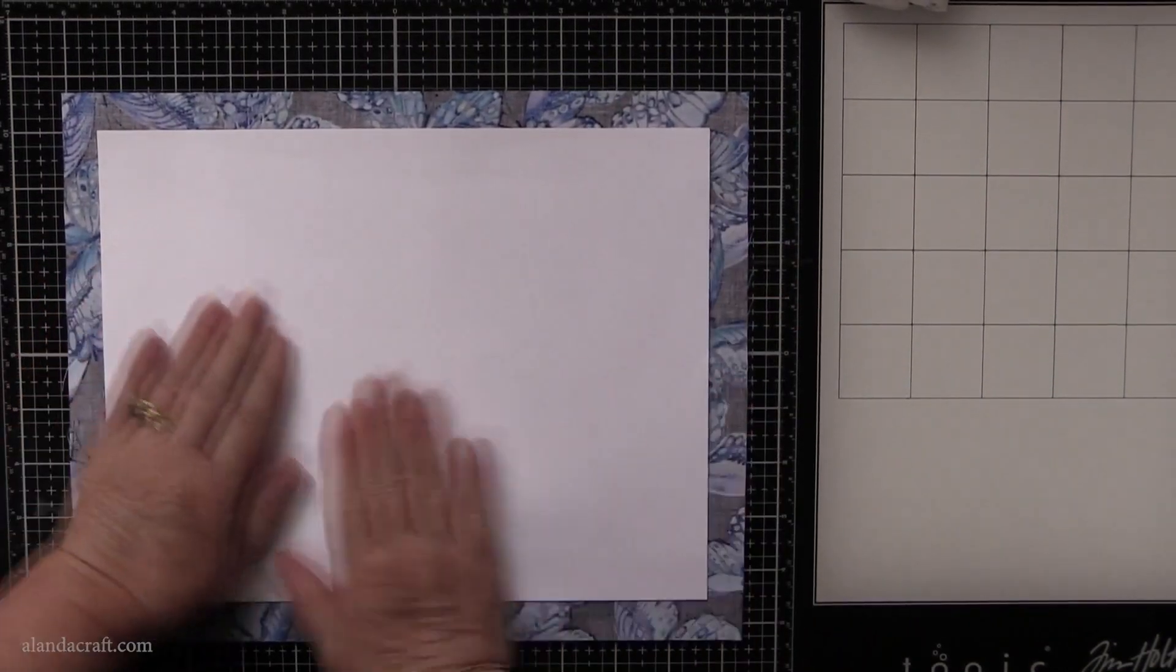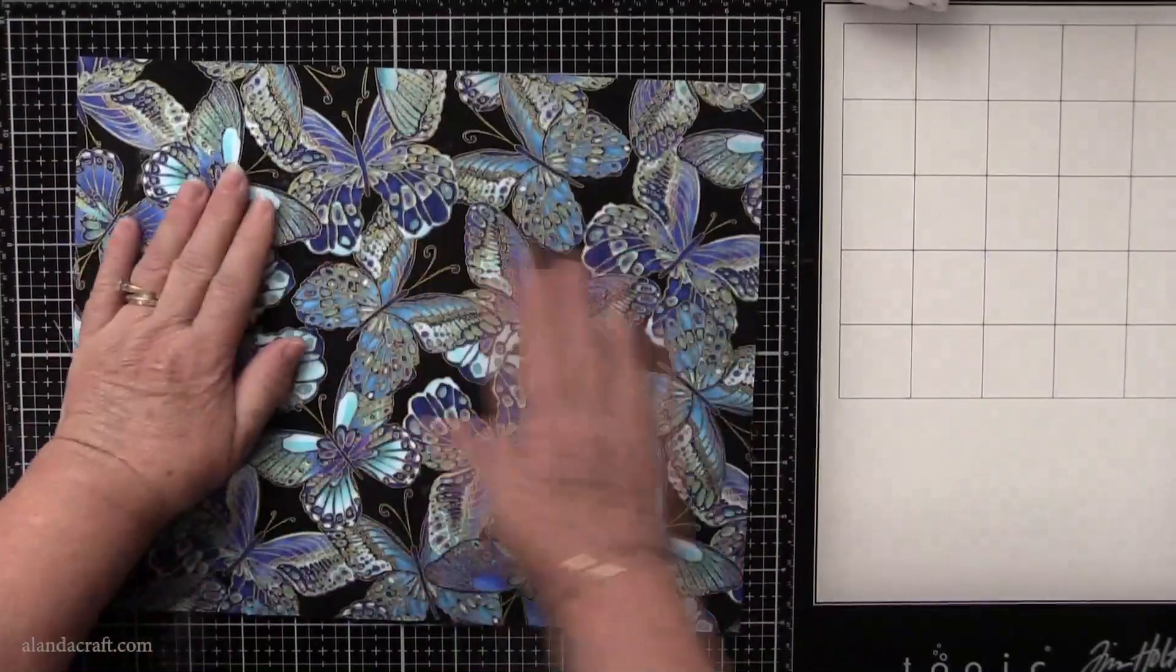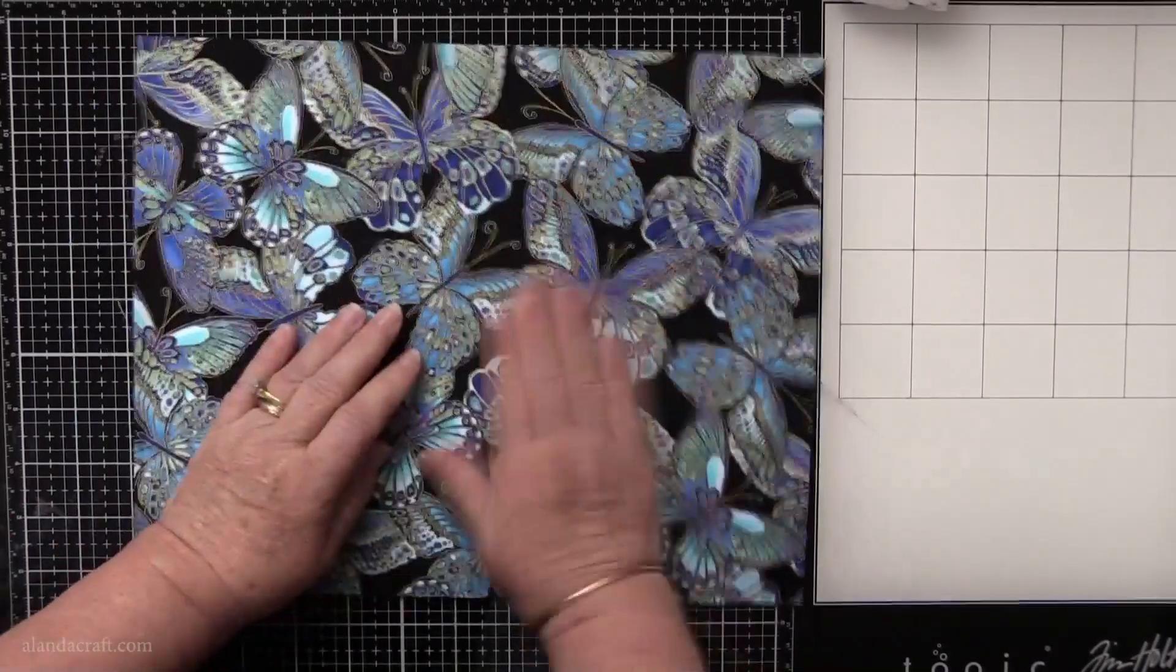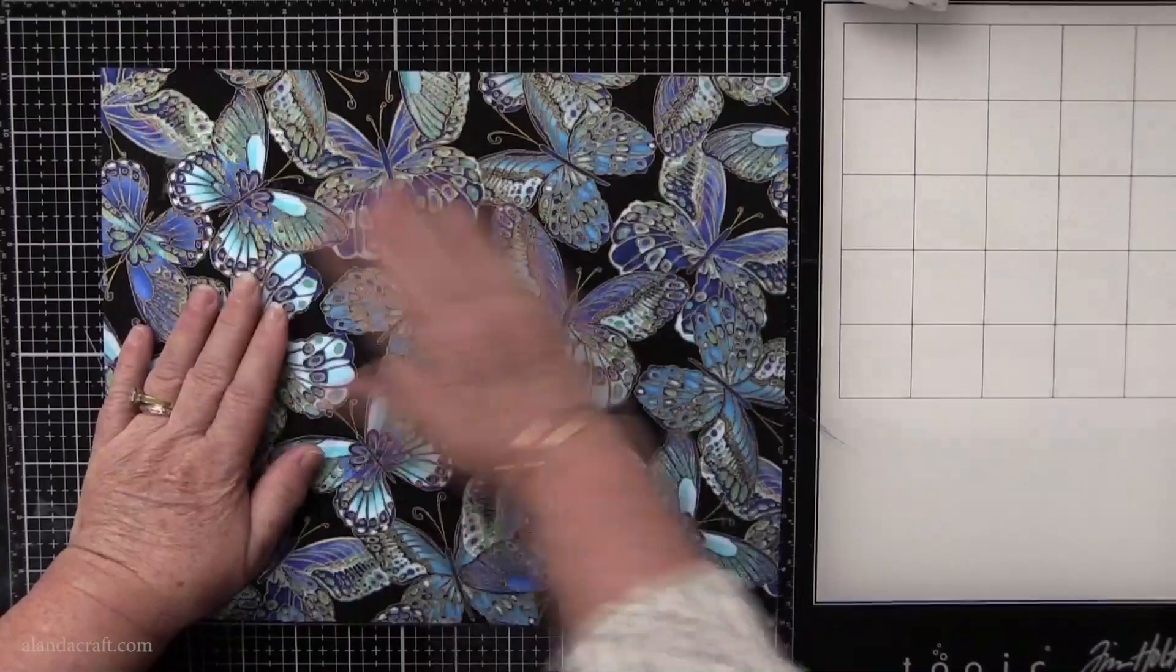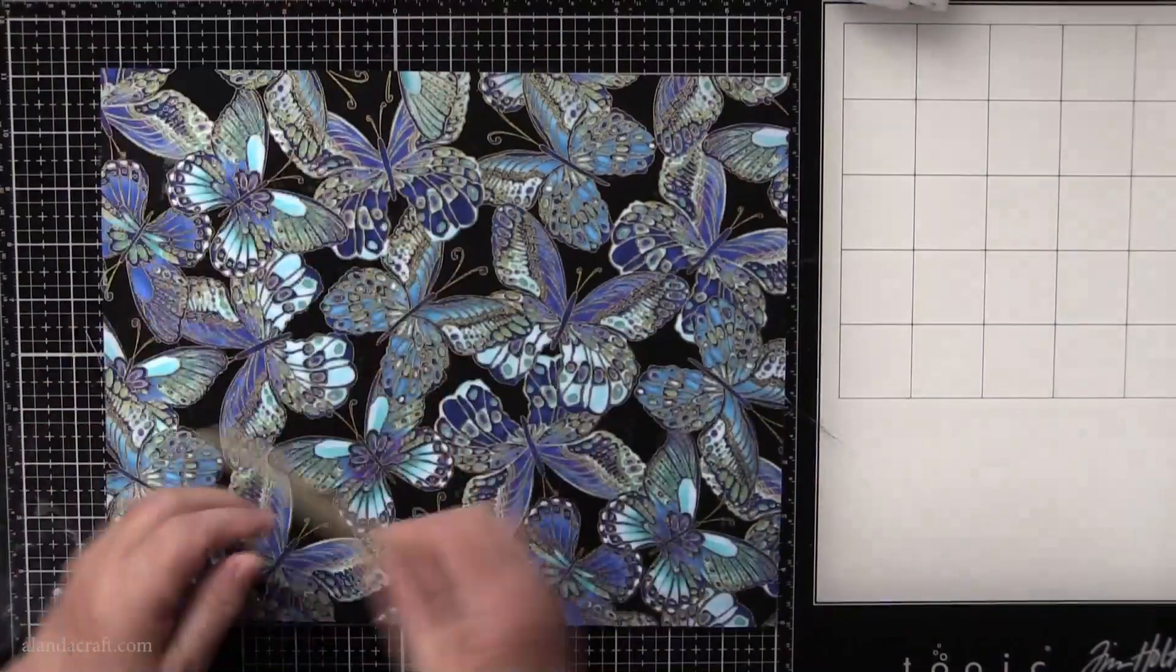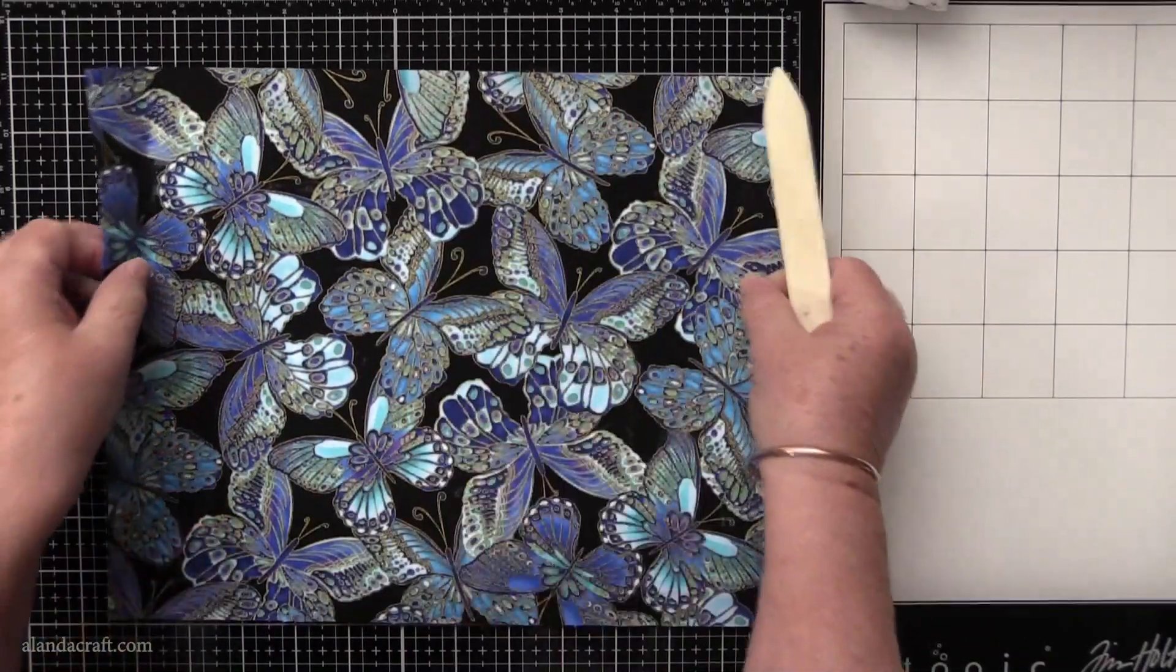And just give it a good press. You don't want any bubbles or anything, you want to get that out, so smooth that down nicely. If you've got a bone folder you can always use that as well. That's that glue moving around underneath the fabric.